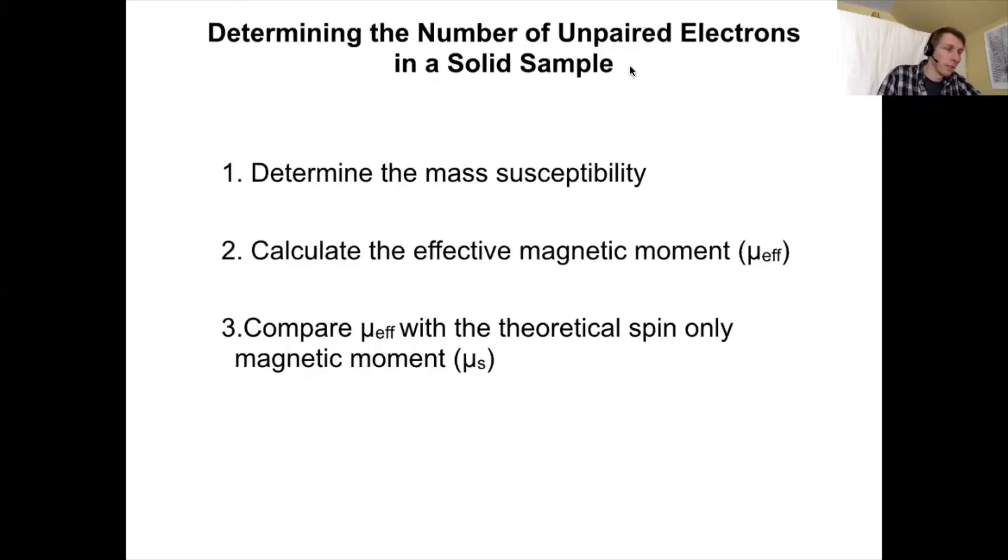This video is about using the technique of magnetic susceptibility in order to determine the number of unpaired electrons in a solid sample. We're going to determine how to use the mass susceptibility to calculate the effective magnetic moment, and then compare the effective magnetic moment with a theoretical spin-only magnetic moment that will allow us to determine how many unpaired electrons are present in a sample.